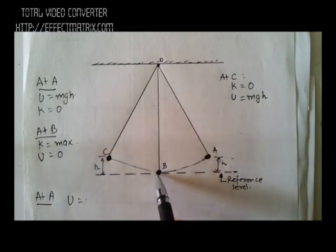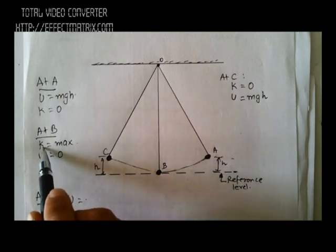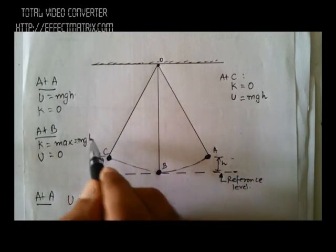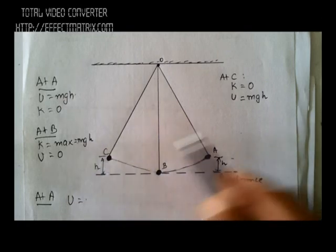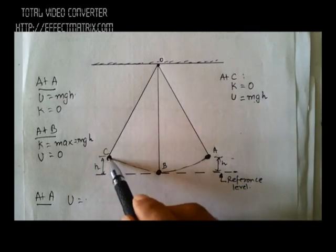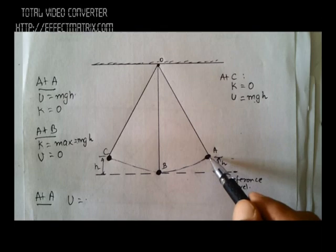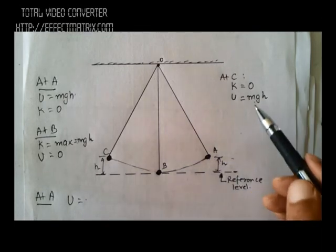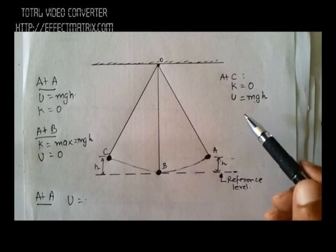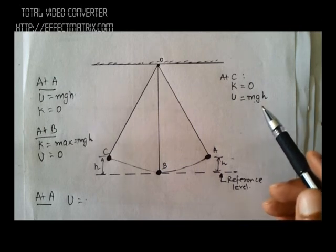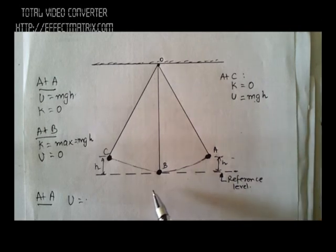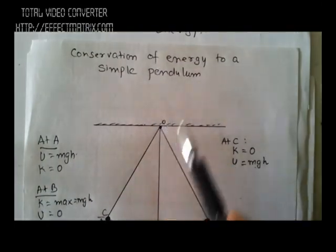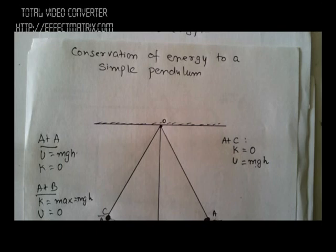At A: potential energy = mgh, kinetic energy = 0. At B: potential energy = 0, kinetic energy = mgh (the entire potential energy converted to kinetic). At C: kinetic energy = 0, potential energy = mgh. At all three locations, the sum of kinetic and potential energy remains constant — that is conservation of mechanical energy for a simple pendulum.